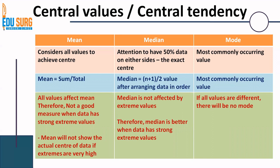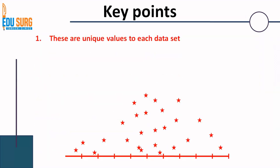Median is better than mean when data has strong extreme values. When all values are different, there will not be a mode since mode is the most commonly occurring value. Very importantly, mean, median, and mode are unique values to each data set. What that means is that from a population, if you take six different samples, each sample will have different mean, median, and mode. This is very important to understand because we are going to study both data distribution and sampling distributions, and you will get confused if you don't understand this point.